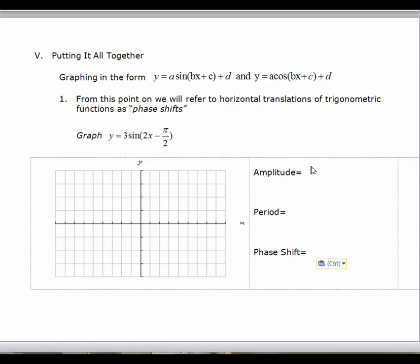So first state the amplitude, which is the absolute value of a, so the amplitude is 3. The period is 2 pi over b, so it's 2 pi over 2, which is just going to be pi.